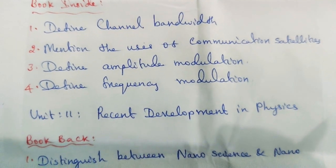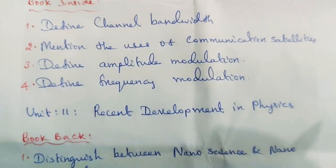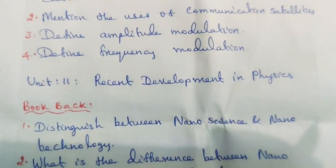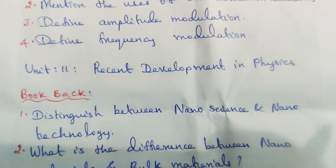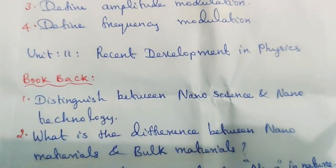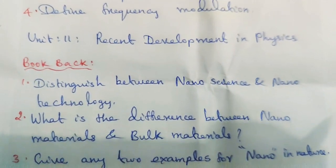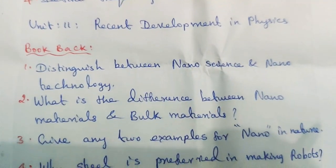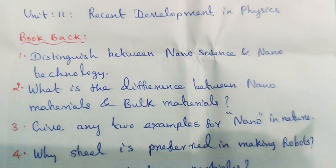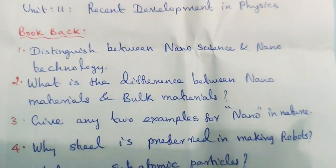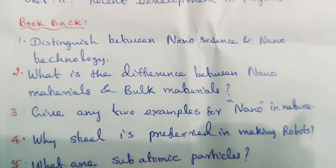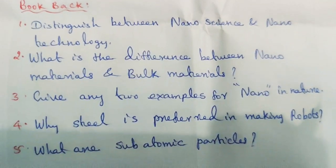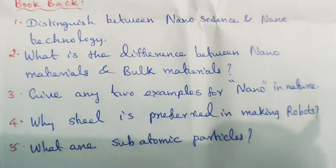Unit 11: Recent Developments in Physics. Book back questions: Distinguish between nanoscience and nanotechnology. What is the difference between nanomaterials and bulk materials? Give any two examples of nano in nature. Why is steel preferred in making robots? What are subatomic particles?